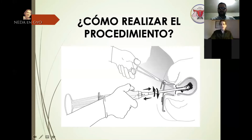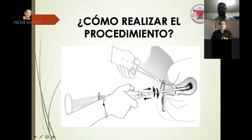En la imagen se observa el espéculo, la pinza de Posi pinzando el labio anterior del cuello, el fondo uterino, la cánula dentro del fondo, el orificio cervical interno y el cuerpo del útero. Se realizan movimientos circulares desde el fondo hasta el orificio cervical interno. Cuando el cilindro de 60 mililitros se llena, se suelta de la cánula, se vacía en la riñonera y se vuelve a conectar para continuar.